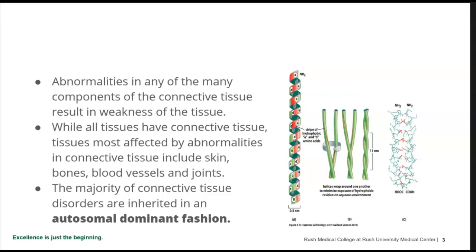Most connective tissue disorders are inherited in autosomal dominant fashion. So if you're on an exam and trying to determine the inheritance pattern, your thought process is: if it's an enzyme, it's probably recessive. If it has to do with a structural protein — one abnormal structural protein that has to get together with others — if it's abnormal, it's going to cause a problem, just like we talked about with osteogenesis imperfecta.